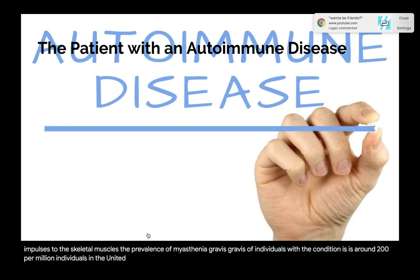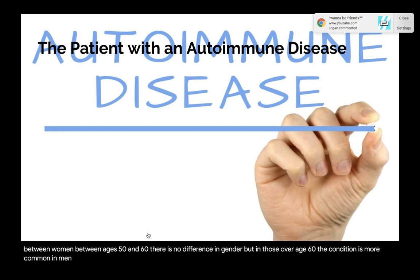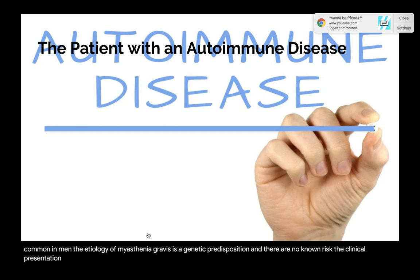Early onset before age 50 tends to occur more frequently in women. Between ages 50 and 60, there is no difference in gender; in those over age 60, the condition is more common in men. The etiology includes genetic predisposition; there are no other known risk factors.